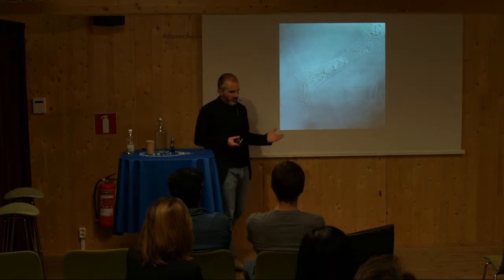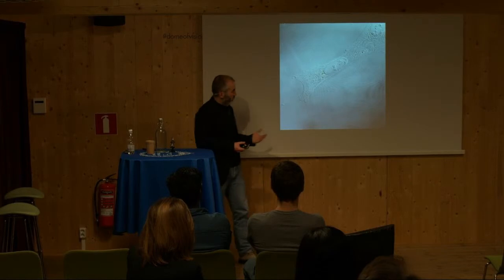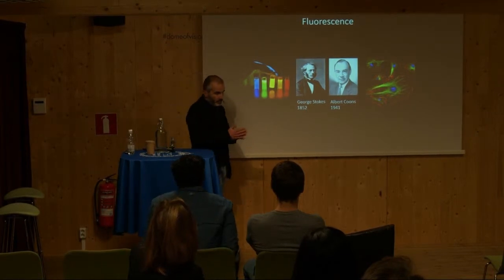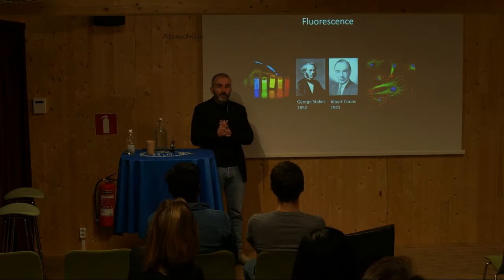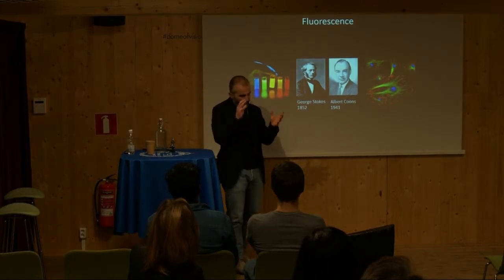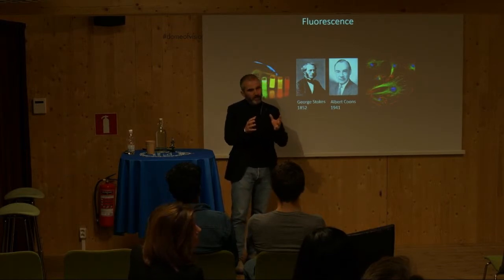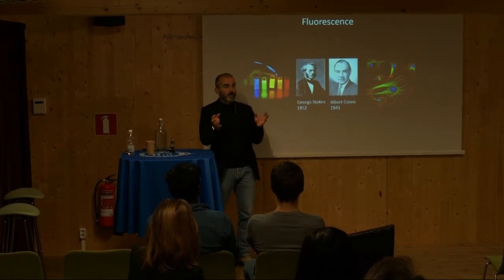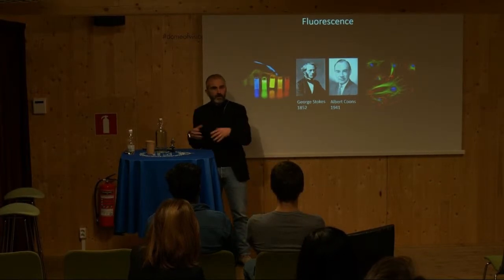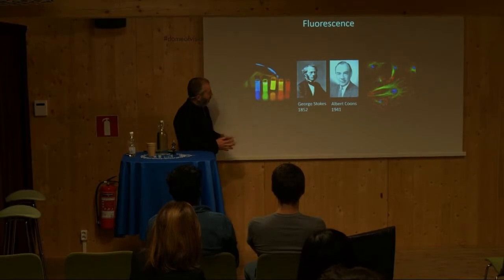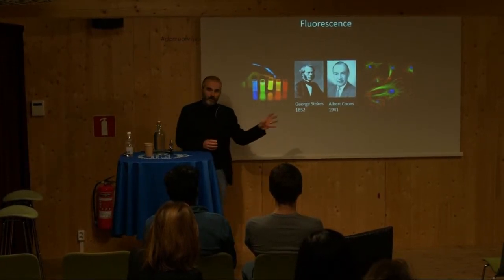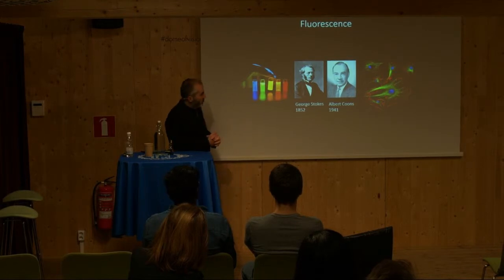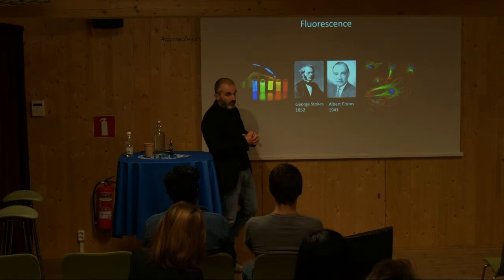Another invention was needed to make the microscope into a really useful research tool — and that was fluorescence. Fluorescence was discovered and described by George Stokes in 1852. It's a molecular principle where you illuminate molecules with short wavelength light; they absorb the light and then re-emit it at a longer wavelength. So you illuminate a molecule with green light and get red light out, creating contrast. Fluorescent molecules were then combined with antibodies by Albert Coons in 1941, starting the field of immunofluorescence.